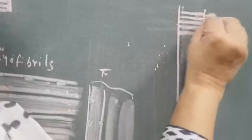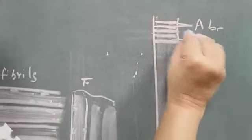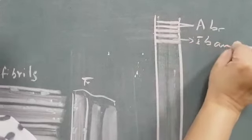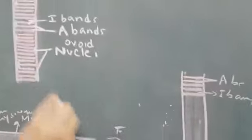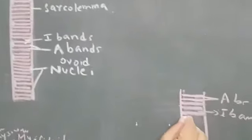These are the darker A bands. And between these, this white portion, light portion is the I band. And you will draw this diagram completely like this. And you will draw them in regular intervals.